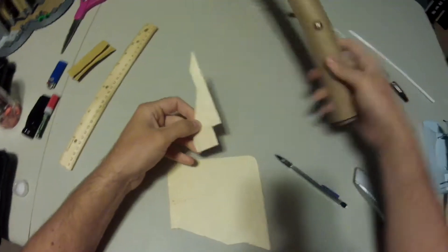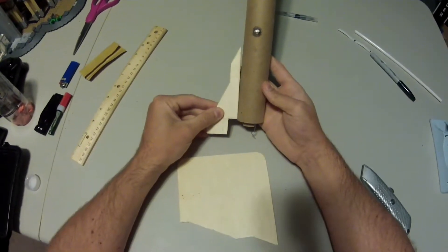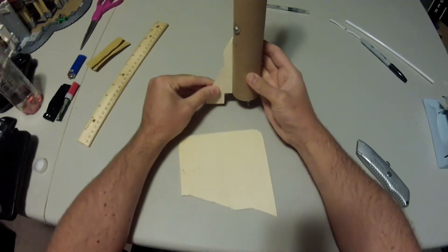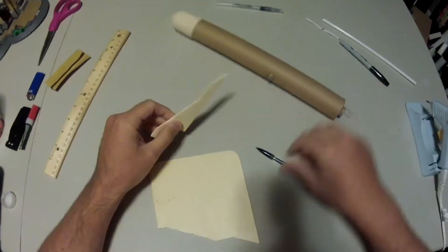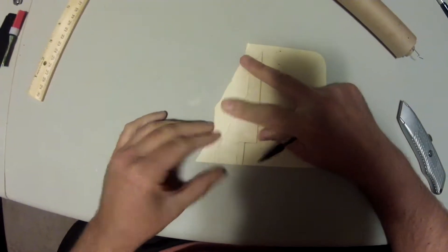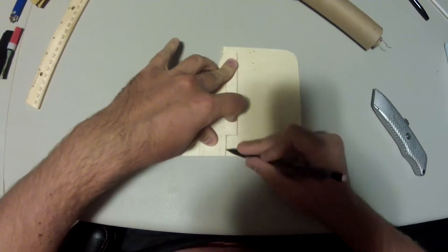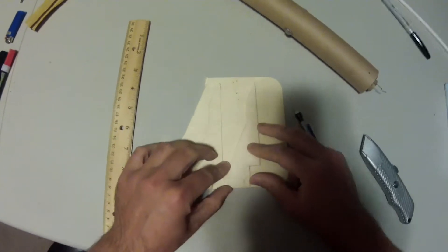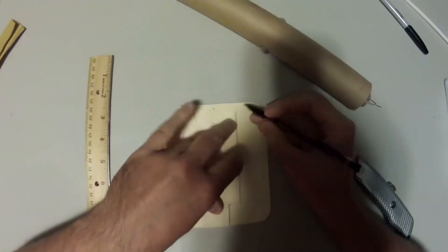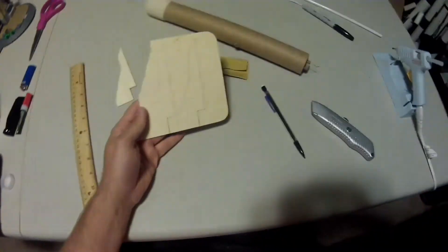And mine is going to look something like this. Now I need to trace out two more fins using this one as a guide. And then of course we're going to cut those out and I'll be right back.